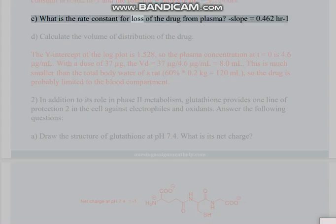Part C: What is the rate constant for loss of the drug from plasma? Slope equals 0.462 hr⁻¹.